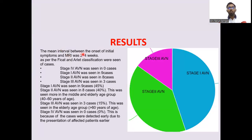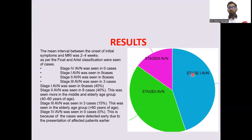Results: The mean interval between onset of initial symptoms and MRI was 2 to 4 weeks. As per the Ficat and Arlet classification: Stage 4 AVN was seen in 0 cases; Stage 1 AVN was seen in 9 cases (45%); Stage 2 AVN was seen in 8 cases (40%); Stage 3 AVN was seen in 3 cases (15%).